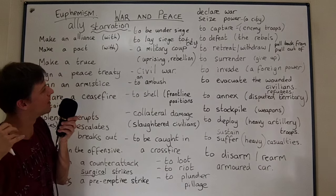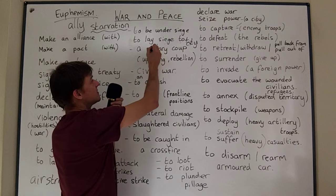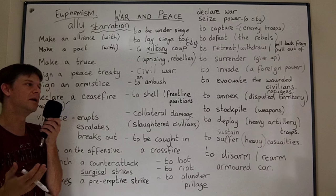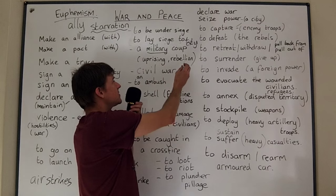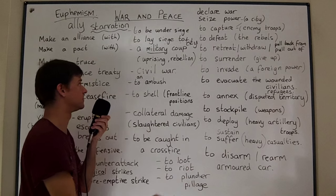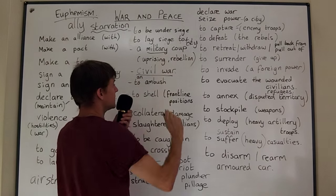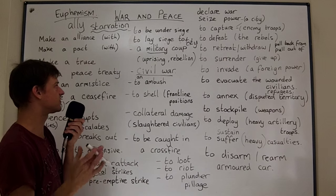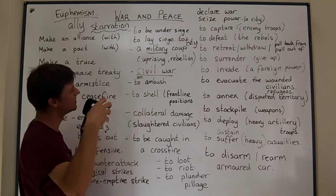A military coup is when one particular group of people seize power. In a military coup, somebody connected to the military uses the army to seize power from the government or whoever's in power at the time. So it's a type of uprising, a type of rebellion — when power changes in the state, going from one group to another, involving the military. There could be a civil war when there's a military coup — a war in one state between two different sides. That's what we call a civil war; it's not an international conflict.